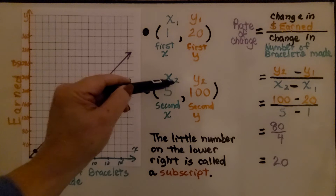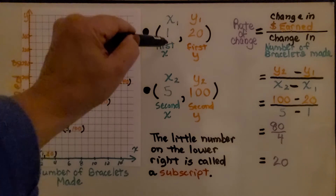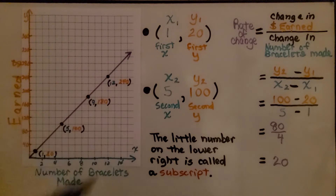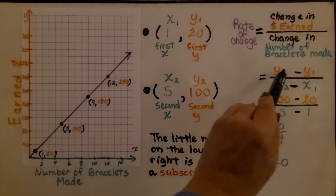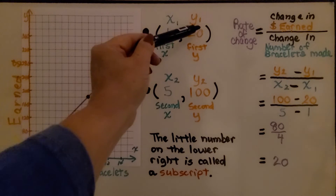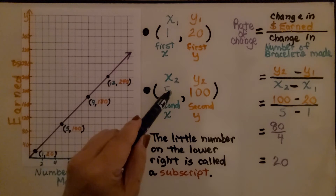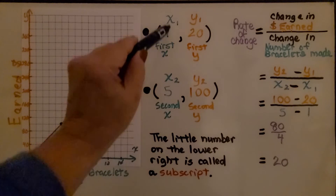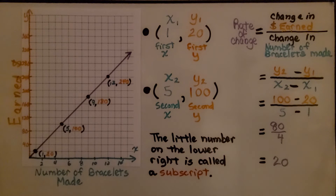The little number on the lower right is called a subscript — it tells us which one is which. If there's a little 1, we know that's the first x; if there's a little 2, we know it's the second x. Our rate of change equals the change in money earned to the change in bracelets made: y₂ minus y₁ over x₂ minus x₁, which is 100 minus 20 over 5 minus 1.